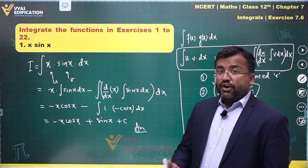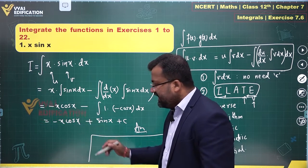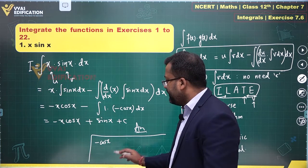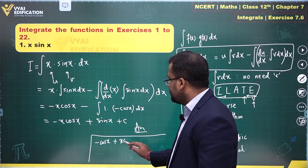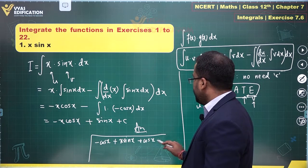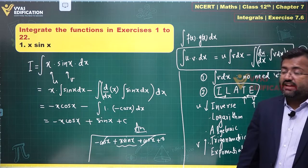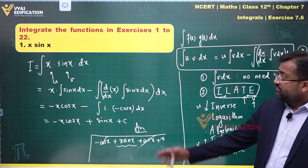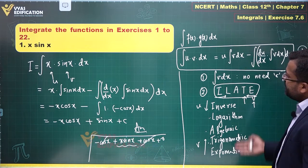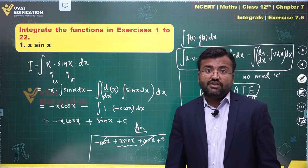You can verify this using differentiation: differentiating −x·cos(x) + sin(x) + C gives −cos(x) + x·sin(x) + cos(x), which simplifies to x·sin(x), confirming the answer. This is the complete solution for the first question.